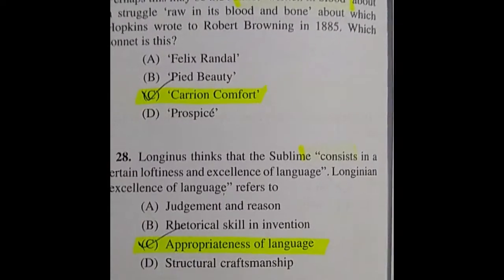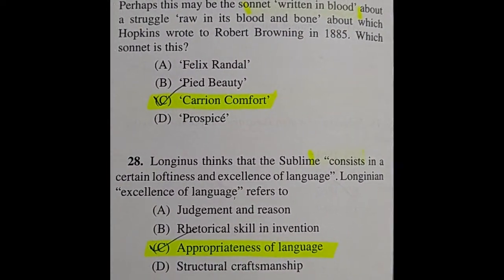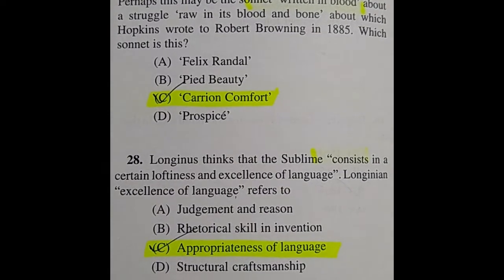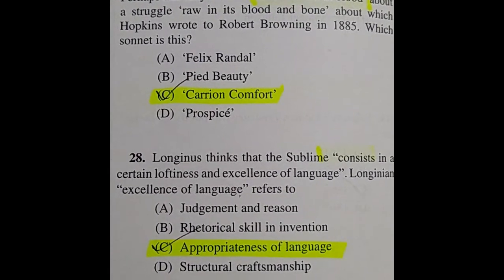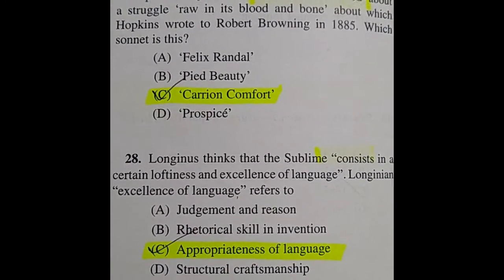Question 28: Longinus says things that are sublime consist in a certain loftiness and excellence of language. Longinus's excellence of language refers to — the right answer is option C: appropriateness of language.